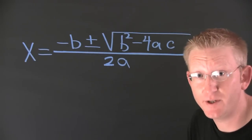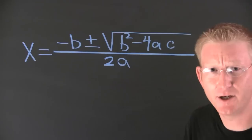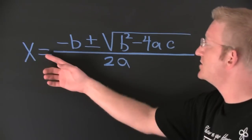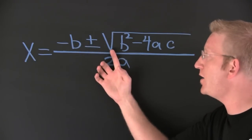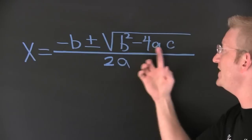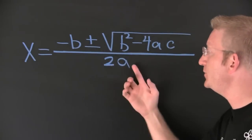It's so famous, even the British know it. Or maybe it's the Geico Gecko. X is equal to minus b plus and minus square root b squared minus 4ac all over 2a.